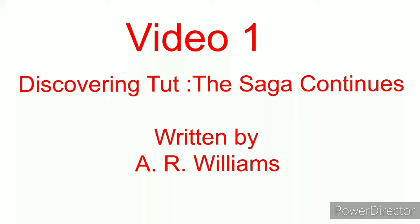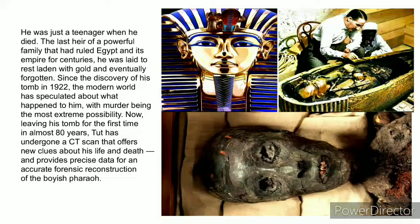Let us start the chapter. He — meaning Tut — was just a teenager, means only a teenager, when he died. The last heir — heir means successor — of a powerful family that had ruled Egypt and its empire for centuries. He was laid — laid means buried — to rest, to take permanent rest, laden with gold, and eventually, in the last, forgotten. Since the discovery of his tomb in 1922...